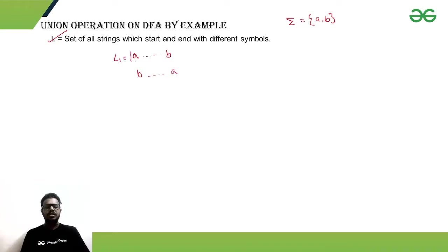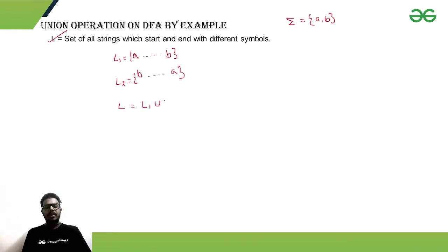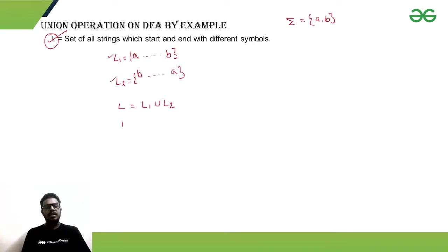We define L1 as the collection of all strings starting with A and ending with B, and L2 as the collection of all strings starting with B and ending with A. Then L is basically the union of L1 and L2, because it contains all strings available in L1 as well as all strings in L2.